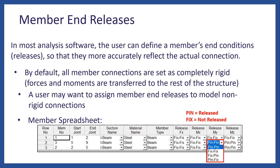The way to understand it is as follows: whenever you read the word pin, this means it is released at the member's end. Whenever you read fix-fix, the member end is not released. So pin-pin means both ends are released. Fix-fix means both nodes are not released — this is the default configuration for any new member. Fix-pin means the I node is not released but the J node is. And pin-fix means the I node is released but the J node is not.